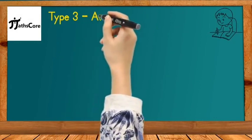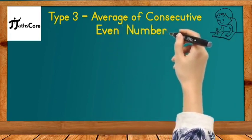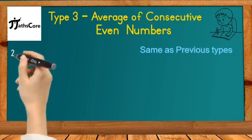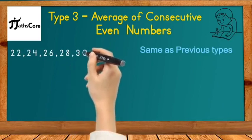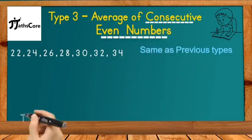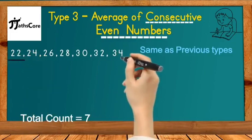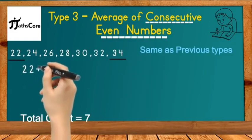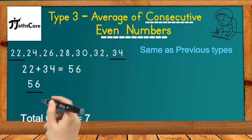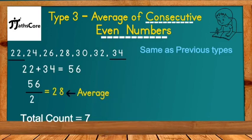Now let us discuss Type 3, which is average of consecutive even numbers. In this type also we need to use the same Vedic math technique. The example is 22, 24, 26, 28, 30, 32, 34. You can see all numbers are consecutive even numbers and exactly 7 numbers are given. So according to the Vedic math technique, add first and last number together. First number is 22 and last number is 34. 22 plus 34 is equal to 56, and 56 divided by 2 is equal to 28, which is the average of all these consecutive even numbers.